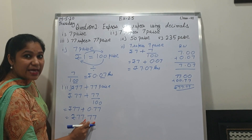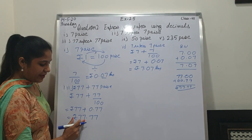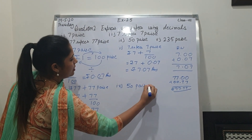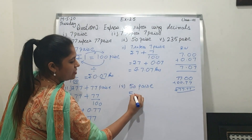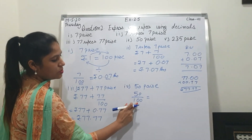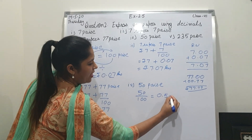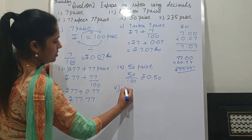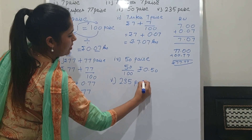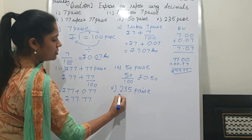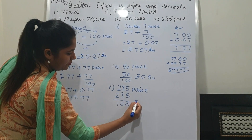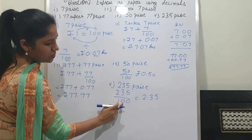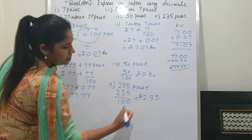Don't read as 77.00 — you have to read as 77.77. Now fourth point, student: 50 paise. It is very simple. 1 rupee is equal to 100 paise. Divide with 100 — two zeros from the extreme. So the answer is 0.50, that is in rupee. Now fifth point, students: we have to convert into rupees, so divide with 100. Two zeros from the extreme, we will leave two decimal places and put a point. So the answer is 2.35.